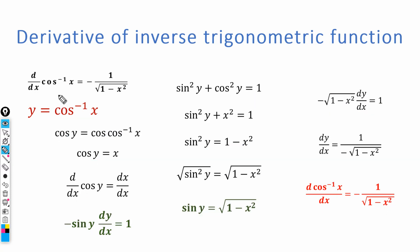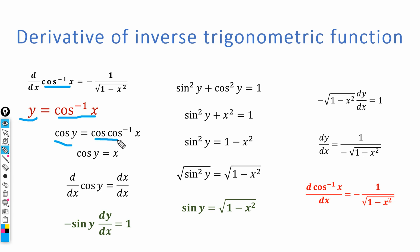Now we are going to prove that the derivative of cos inverse of x is equal to minus 1 over the square root of 1 minus x squared. The proof is almost similar to the previous one. We suppose that y is equal to cos inverse of x. Taking cos on both sides, the left hand side becomes cos of y, and on the right hand side, cos and cos inverse cancel out, giving us cos y is equal to x.